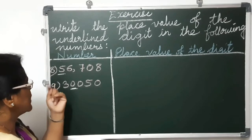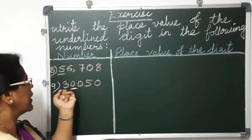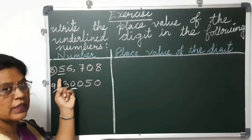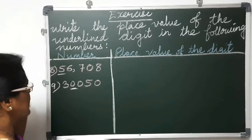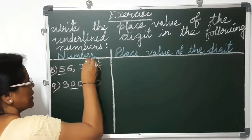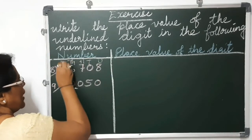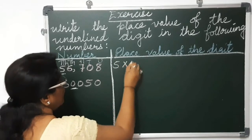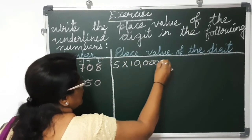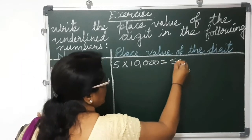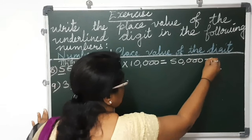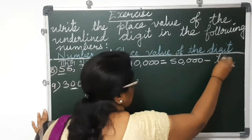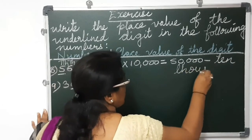Now the 8th sum: 56,708. The underlined digit here is 5, and 5 is in 10,000 place. The place value of 5 is 10,000. Units, tens, hundreds, thousands and 10,000 — so 5 into 10,000 equals 50,000. The place value of this digit is 10,000.